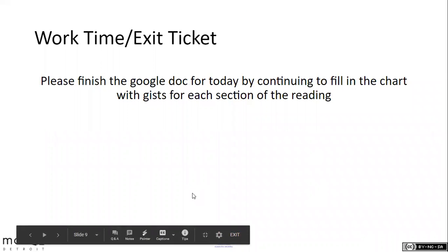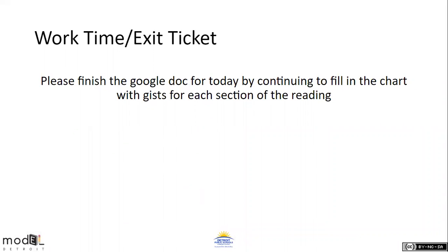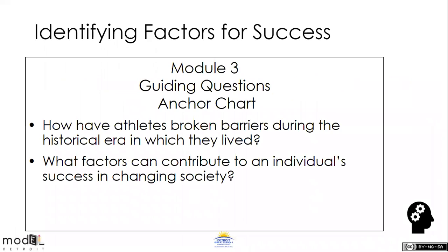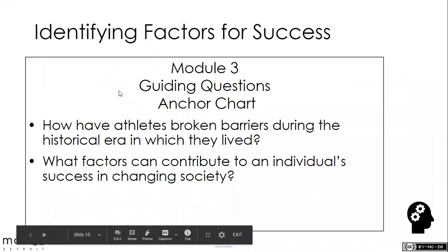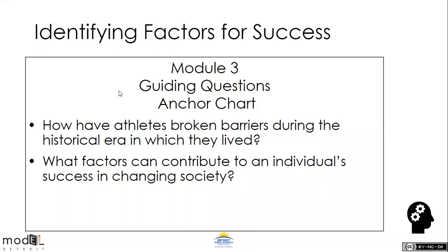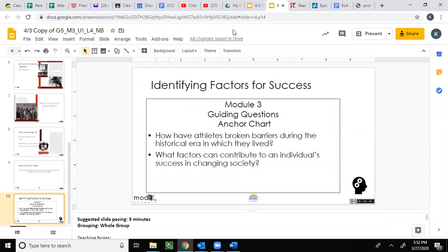For your work time today, you're going to finish the Google Doc by continuing to fill in the gist for each section. Then I want you to come back to thinking about identifying factors for success: How have athletes broken barriers during the historical era in which they lived, and what factors can contribute to an individual's success in a changing society? I will be available if you have any questions. You have done this just a couple of times now, so hopefully it'll go well. Have an awesome weekend!